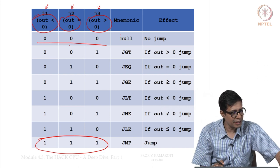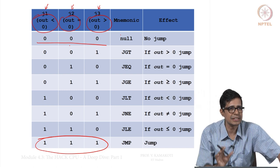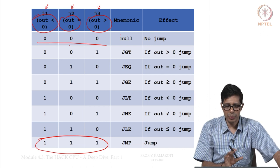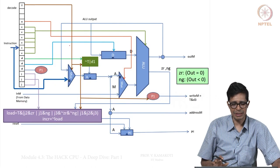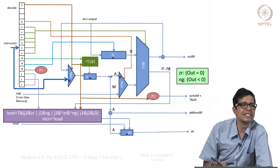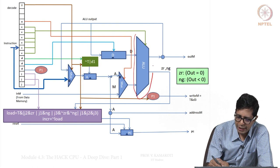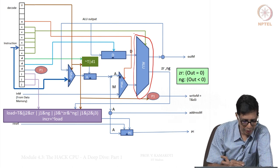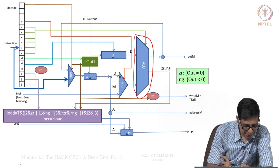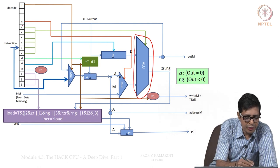So we have quickly seen how instructions are organized and what each bit means. Now we will see how the CPU is actually built. Let us go register by register. First, take the ALU — the ALU has 6 computation bits which tell you what to compute. These 6 computation bits are bits 6 to 11 of the instruction and are given as input to the ALU.